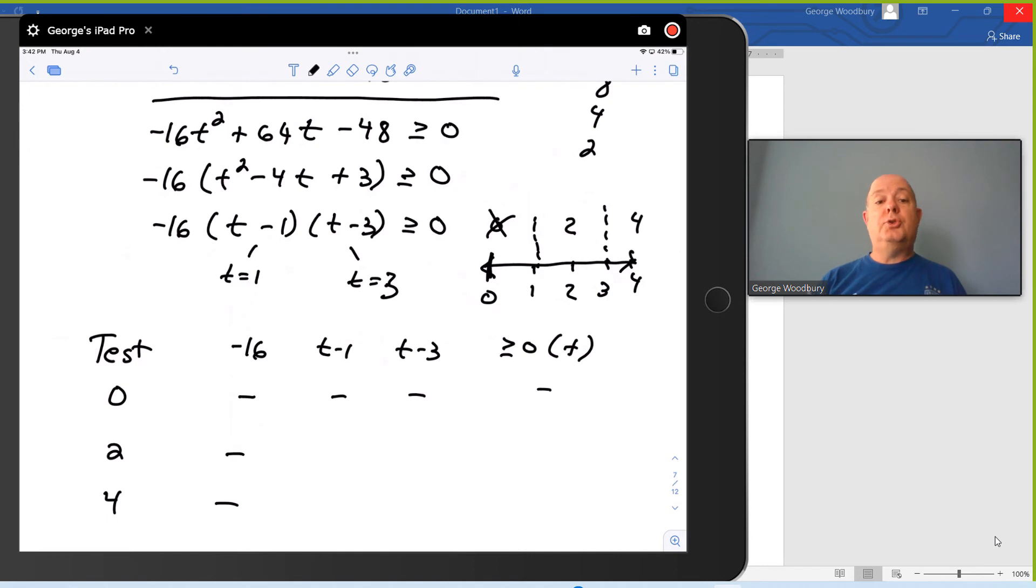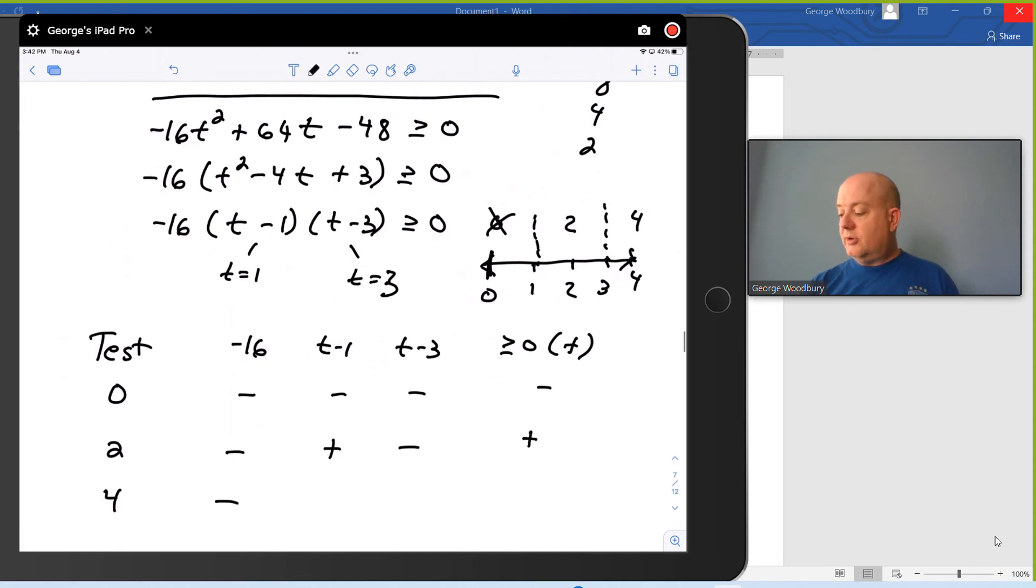Let's try 2. 2 minus 1 is positive 1. So that's positive. 2 minus 3 is negative 1. That's negative. And I've got a product of two negative numbers with a positive number. That product is positive. That's what we wanted. That means that 2 is a solution. I'm going to shade the interval where the 2 came from.